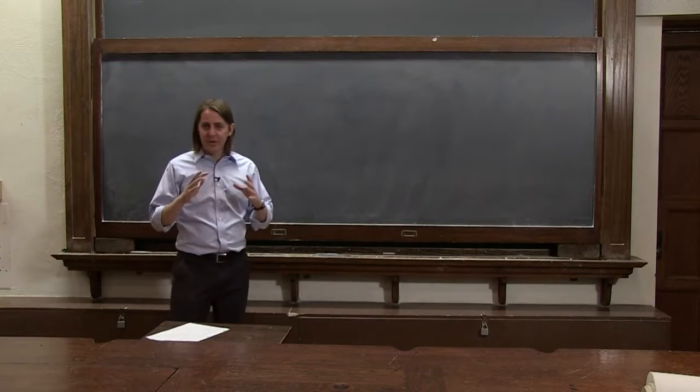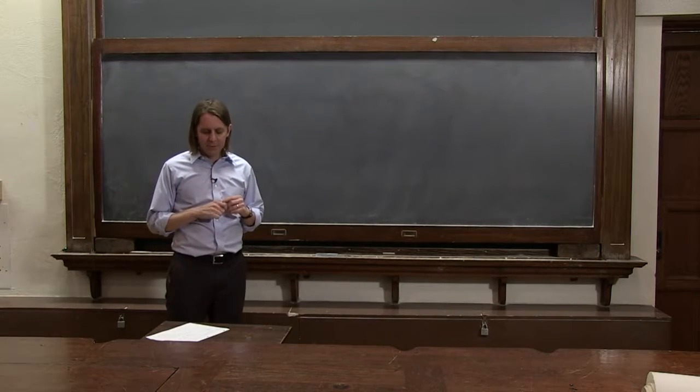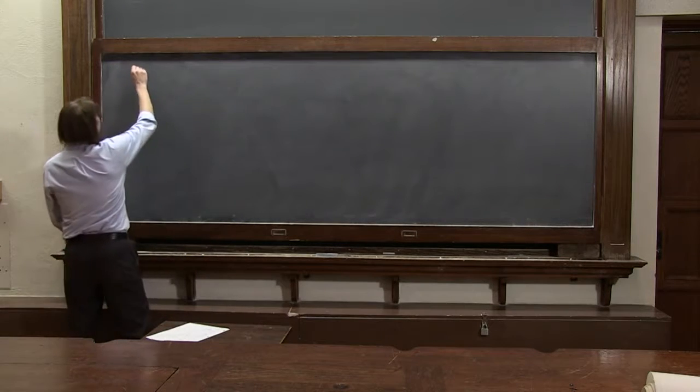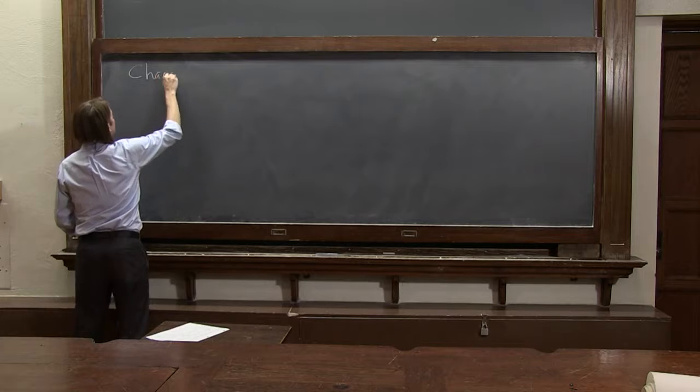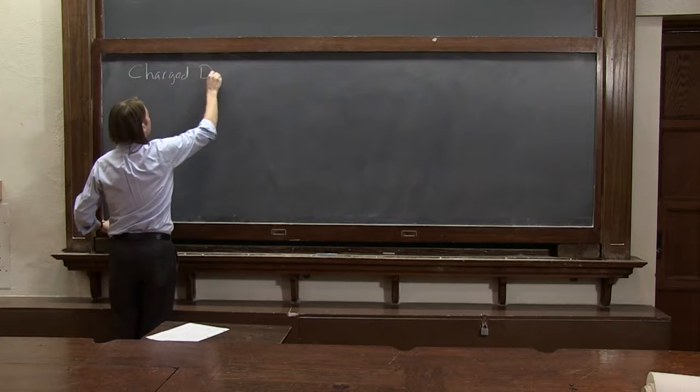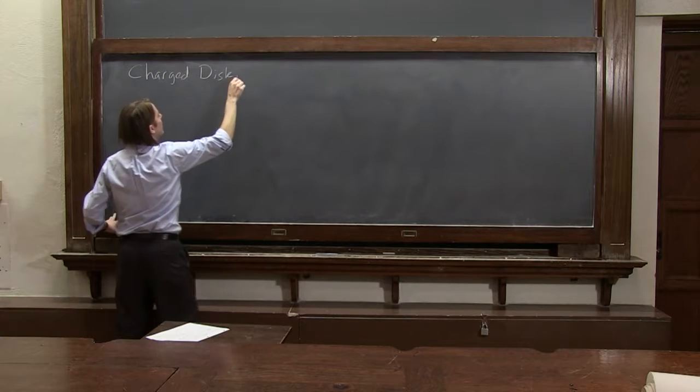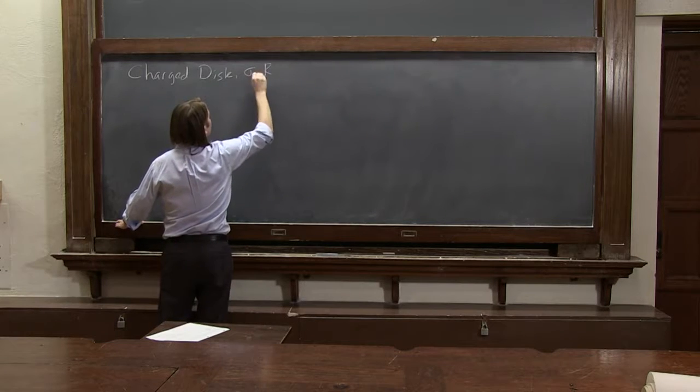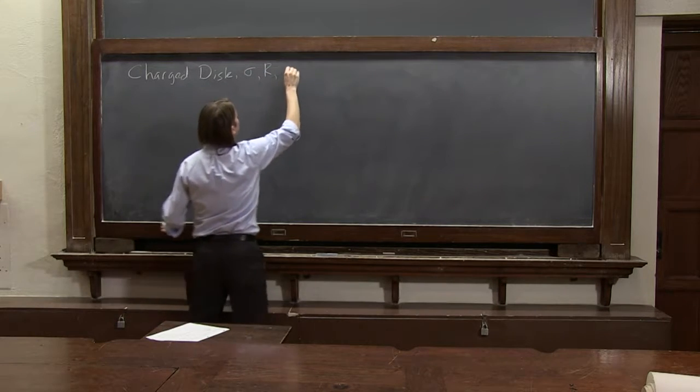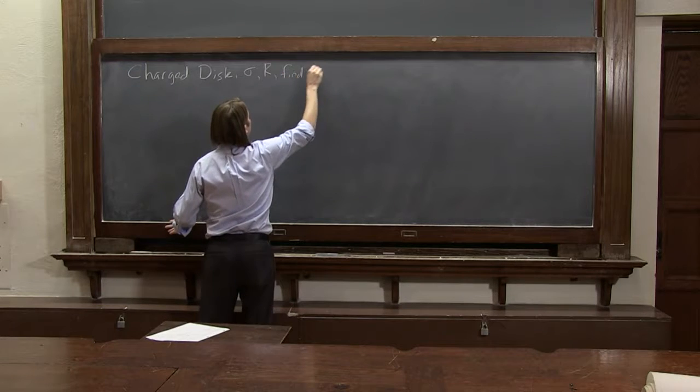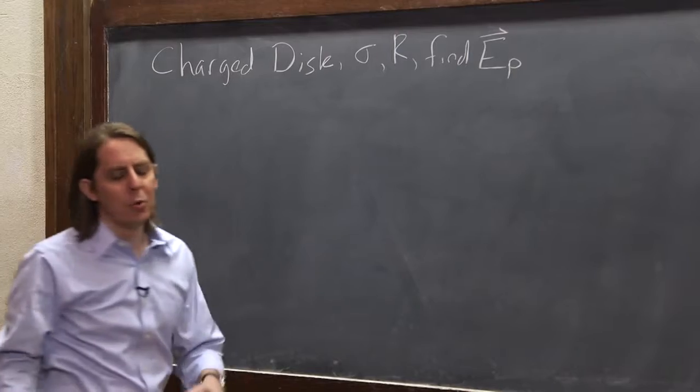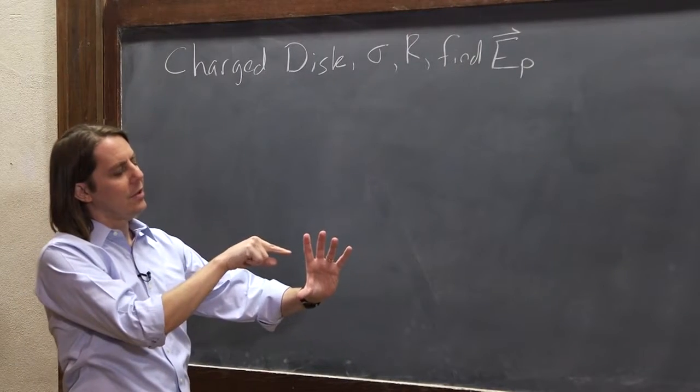We now have a way to calculate the dq for a surface charge. Let's go ahead and do it. Let's do a problem. Let's do the charged disk with charge density sigma, radius r, and let's find the e-field at a point. We're going to do a point on the axis of the disk.